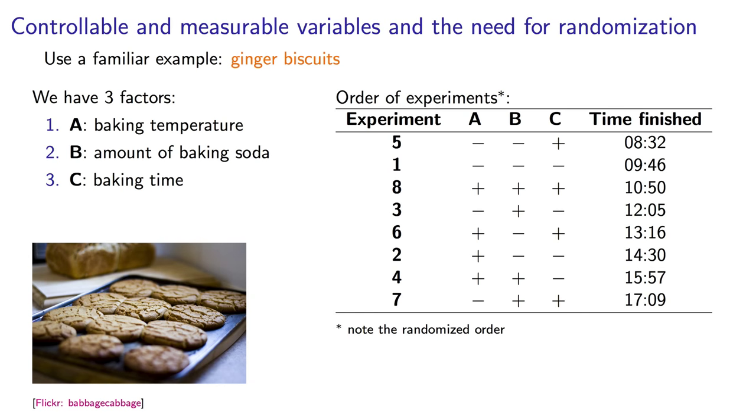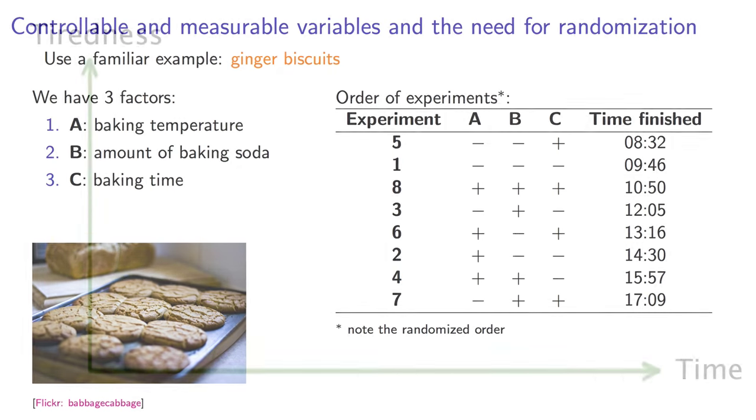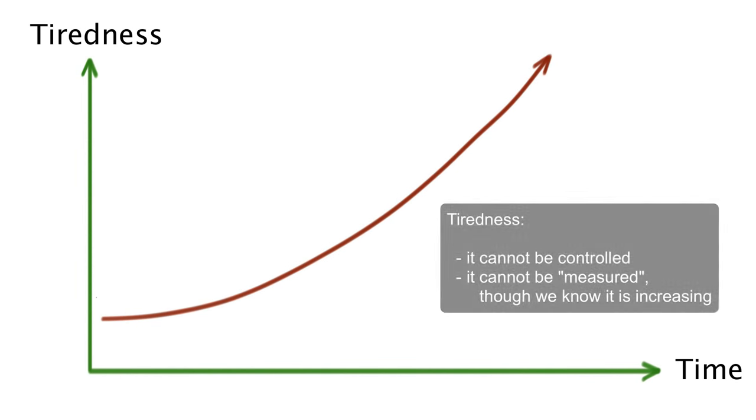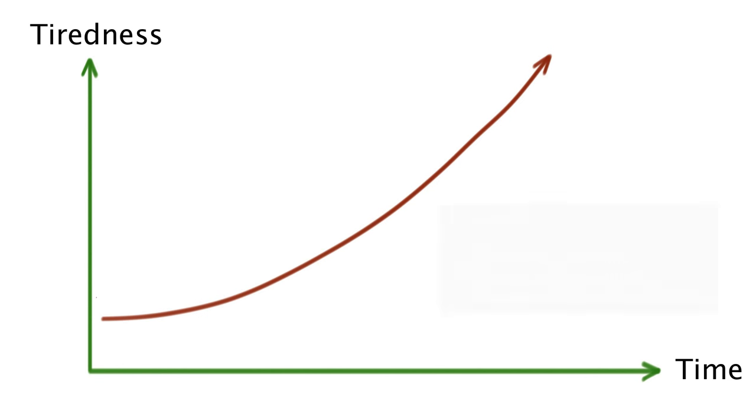So I start in the morning and by the end of the day I'm going to be pretty tired. When I mix the ingredients by hand, I may not be doing it so well by the end of the day. Tiredness is something I cannot control in the experiments if I do them all in one go. And I'm also not able to measure my tiredness. But being tired will affect some of the outcome variables, such as texture of the biscuit, if I'm not mixing things properly.